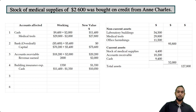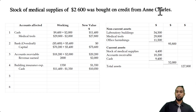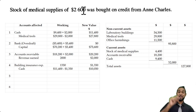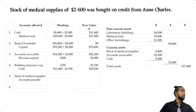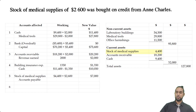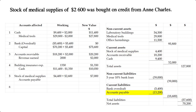Item five: stock of medical supplies of $2,600 was bought on credit from Ann Charles. Medical supplies is an asset going up — debit stock of medical supplies. Buying on credit from Ann Charles means she's a creditor — accounts payable is a liability going up, so credit accounts payable. Stock of medical supplies was initially $4,400, plus $2,600 gives us $7,000. Accounts payable was $13,200, plus $2,600 gives $15,800.